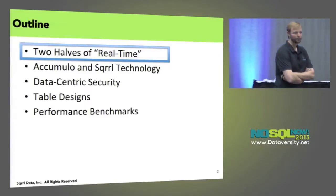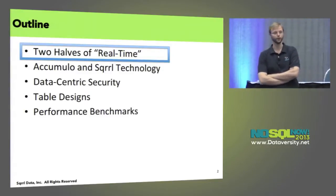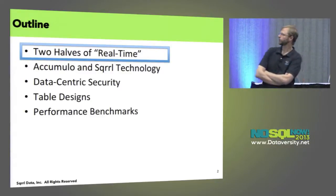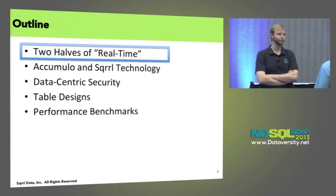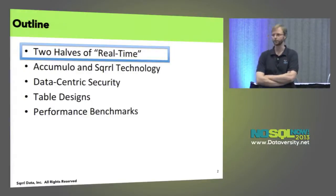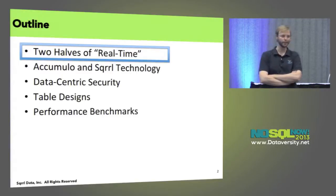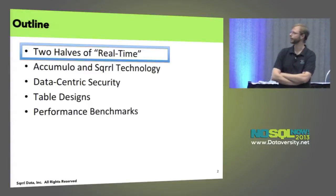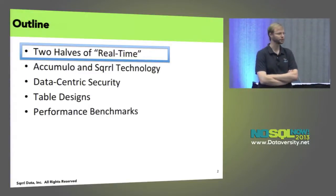So again, two halves of real-time. We're going to talk about data-driven and query-driven real-time analysis. We're going to talk about Accumulo and Squirrel, and in particular, since we have a big emphasis on security, I'm going to talk about data-centric security and how that fits into big data analysis in general. We'll talk about some table designs to support a variety of applications, and then I'll share some performance benchmarks so you guys can get an idea of how this actually works and how well it works.